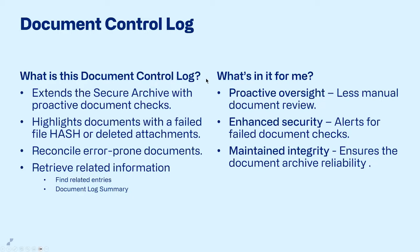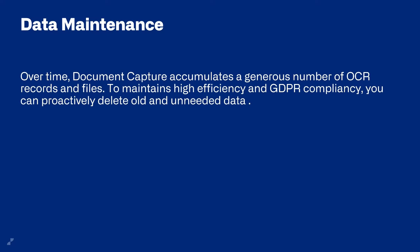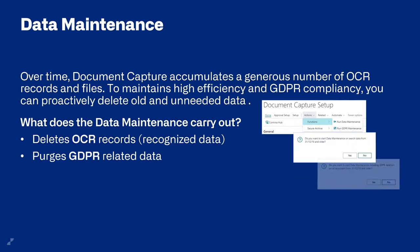Moving on to data maintenance. Using Document Capture over a number of years, you will generate a lot of data — a lot of OCR files, a lot of records stored in your database and tables, taking up space and perhaps slowing the system. We have two steps: a deletion of OCR records — those recognized data — and a possibility to purge GDPR-related data, meaning data that has a personal character and needs to be deleted due to legislation or local laws.